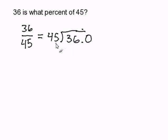So, 45 divides into 360 about 8 times. 8 times 5 is 40. 8 times 4 is 32 plus 4 is 36. I subtract and I get zero.